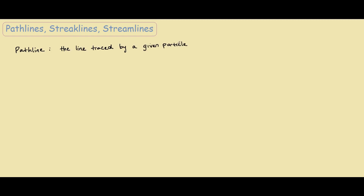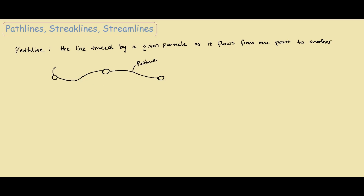The first one is a pathline. The pathline is probably the most easiest one — it's just a line traced by a given fluid particle as it flows from one point to another. So let's say we have a particle here, and at some different time later it travels over here, and then over here. This line is what we call a pathline, with the particle at t equals zero, t equals one, and t at the end.